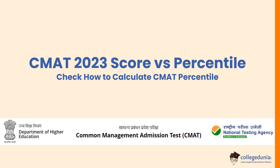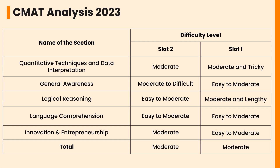Hello everyone, welcome to College Dunya's YouTube channel. Today we will be discussing CMAT score versus percentile and check how CMAT percentile is calculated. As you can see, the section-wise difficulty level of CMAT 2023 exam for both Slot 1 and Slot 2 — the overall paper for both slots was of moderate level, whereas the Quantitative Techniques & Data Interpretation section and Logical Reasoning section were a bit trickier and lengthier for Slot 1 as compared to Slot 2.